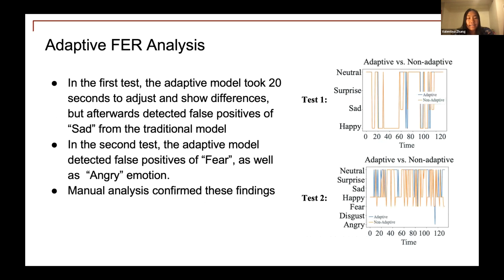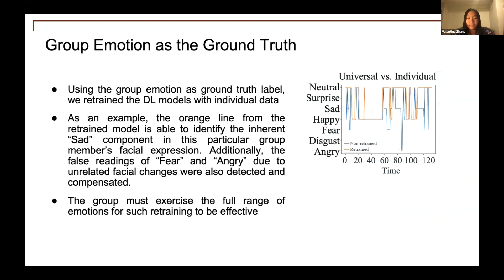Here is an analysis of our adaptive FER against the non-adaptive FER system, where the pixel-based and landmark-based models carry equal constant weights. In the first test, the adaptive model took 20 seconds to adjust and show differences, but then began to detect false positives. In the next test, there were also false positives of fear and anger detected. We determined these were false positives by manually inspecting the test videos. In one example, the retrained model — shown as the orange line — was able to identify that a certain individual in the group had an inherent sad component in their face, and thus correctly recognized prior readings as false positives.